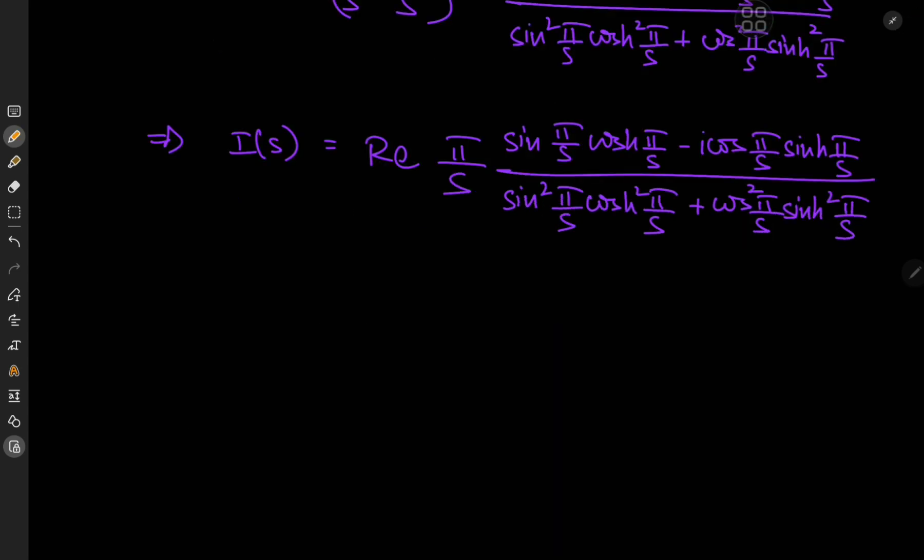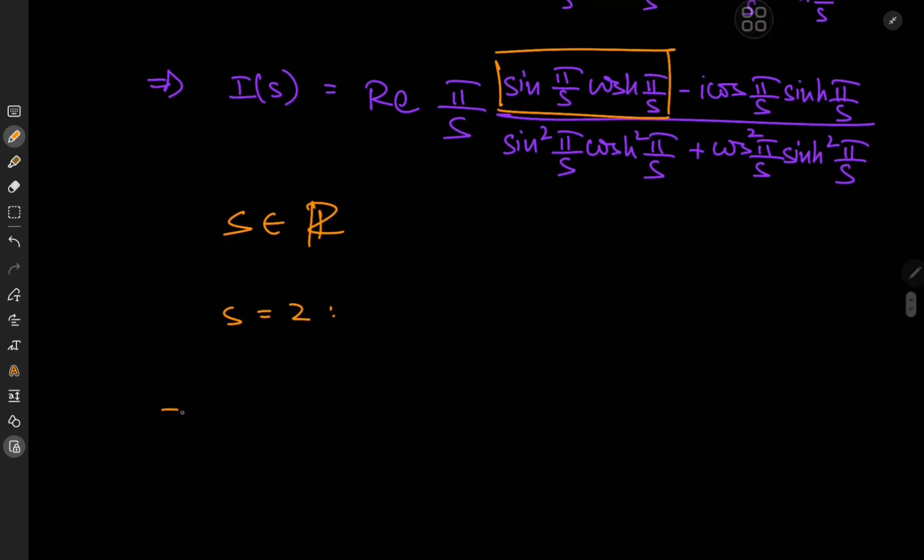Okay, cool. So this is the structure that we have for i of s. And if we let s here belong to the set of real numbers, then we see that we only need this bit of the denominator. So what if we look at some cases like s here being equal to 2? In that case, we have i of 2.